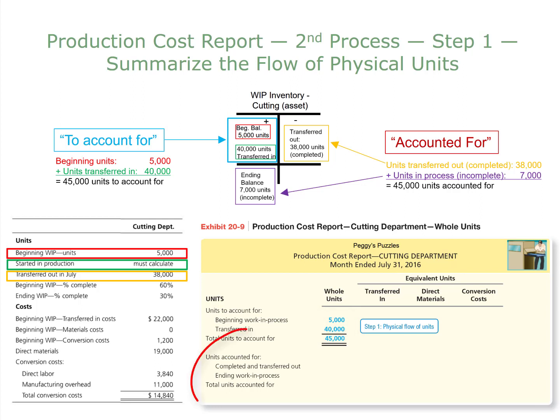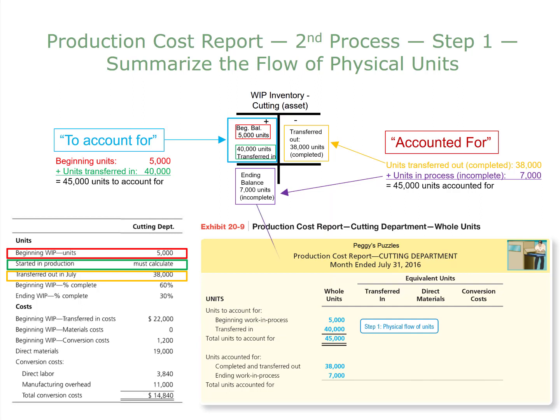Then we move on to units accounted for, which starts with units completed and transferred out — 38,000 — and add to that the number of units incomplete, in other words, the ending balance of units. Adding completed and transferred-out units to ending work in process units, we get 45,000 total units accounted for.